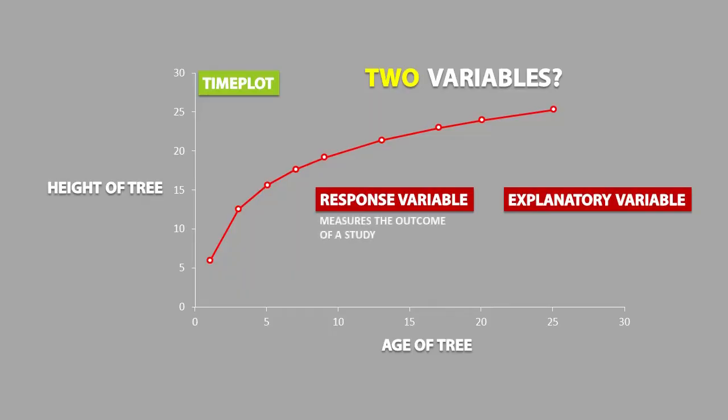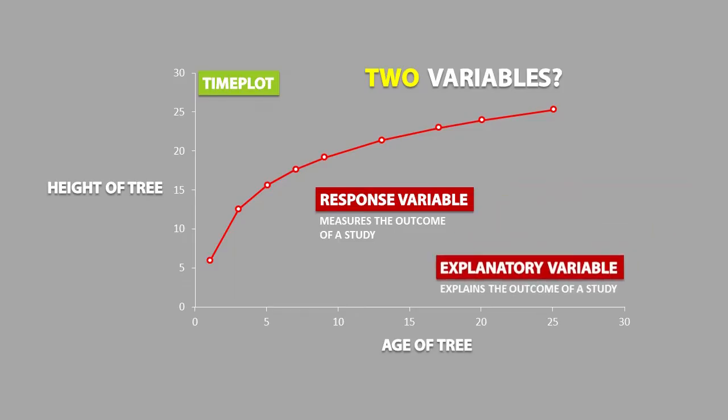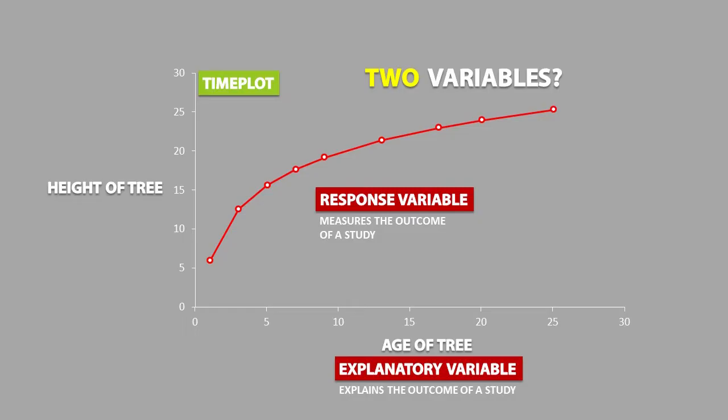The response variable measures the outcome of a study and the explanatory variable explains the outcome of a study. In this example, the age of the tree is the explanatory variable because as the tree gets older, the taller it will be.